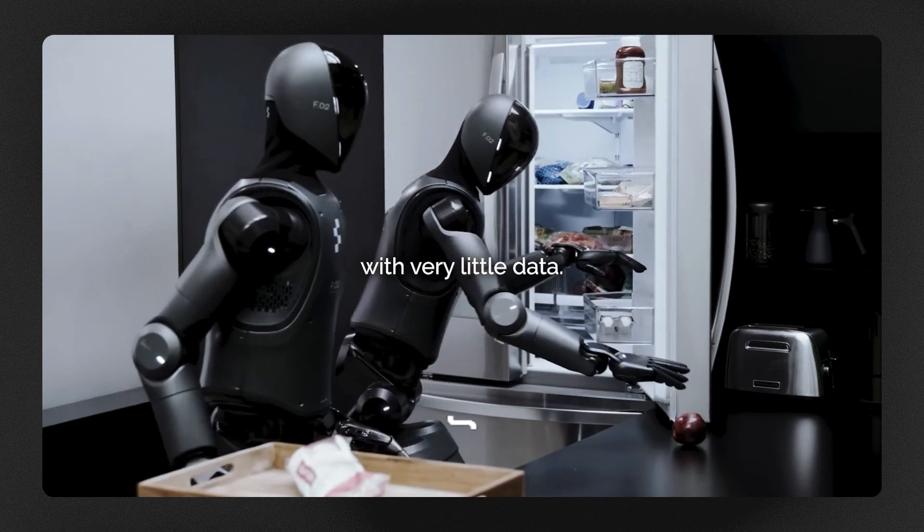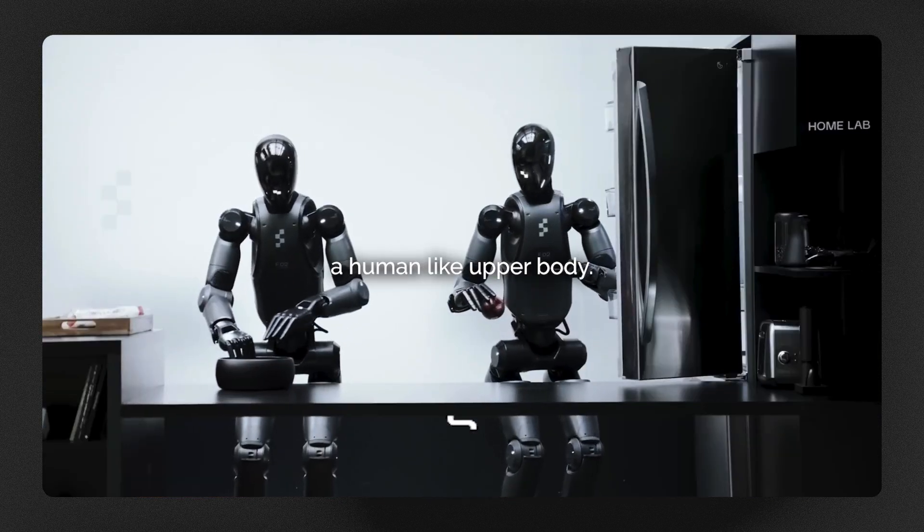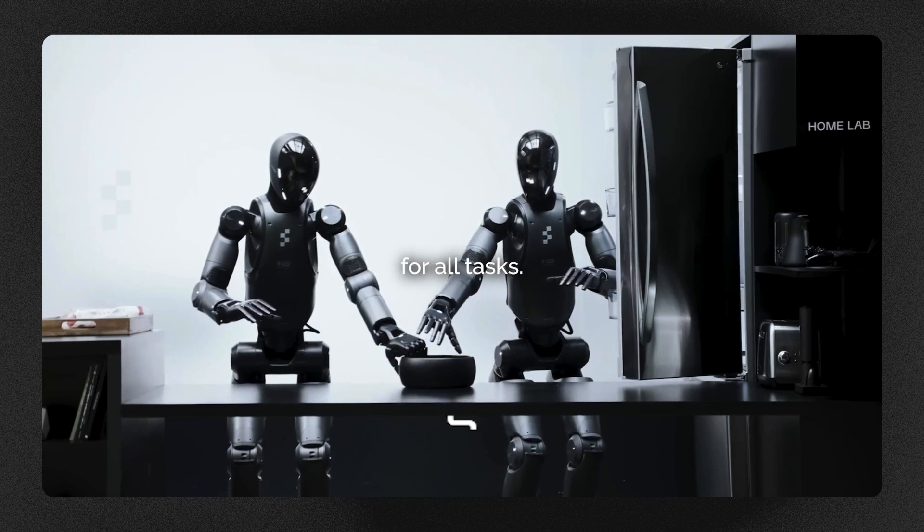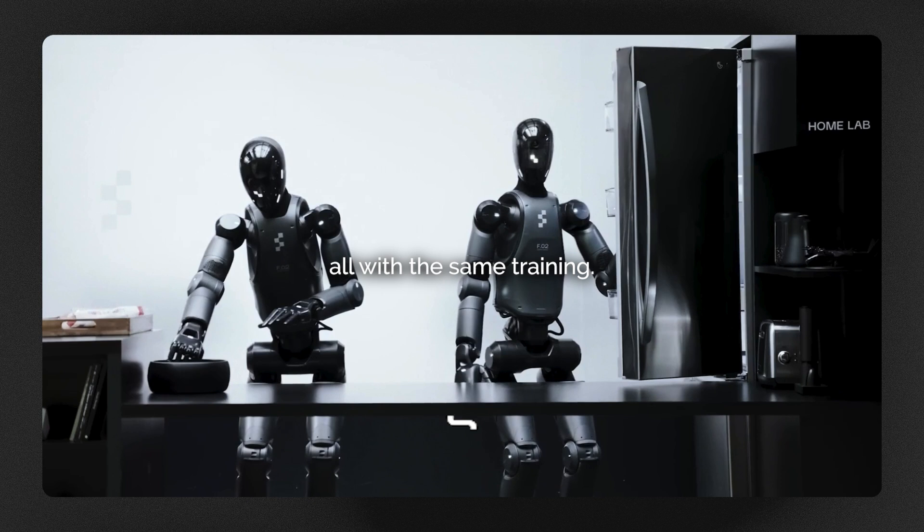Helix learns quickly with very little data. It's trained to handle the complex tasks of controlling a human-like upper body. Unlike other systems, Helix uses one set of instructions for all tasks. It can pick up items, use drawers, and even help other robots, all with the same training.